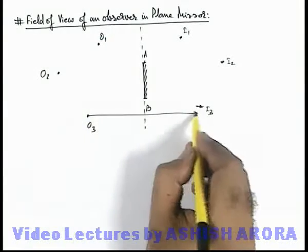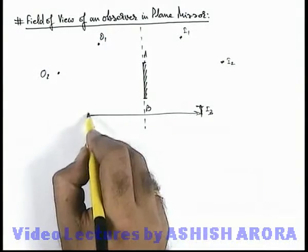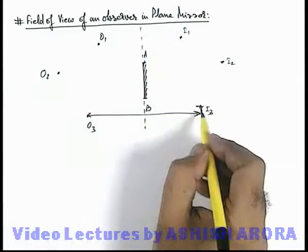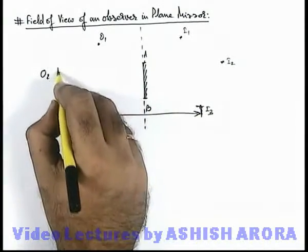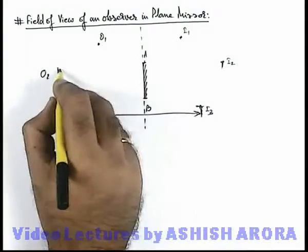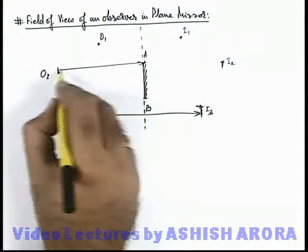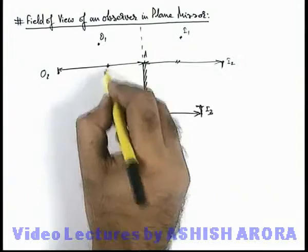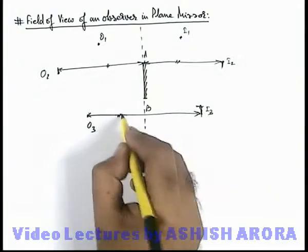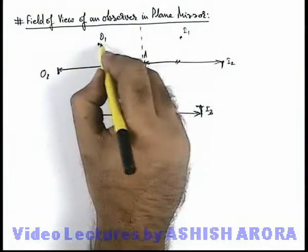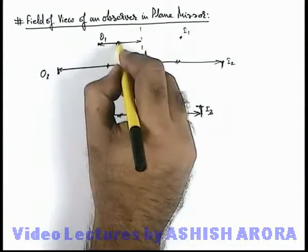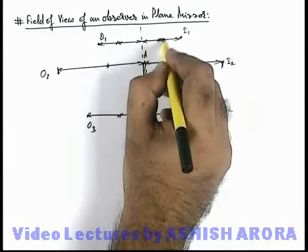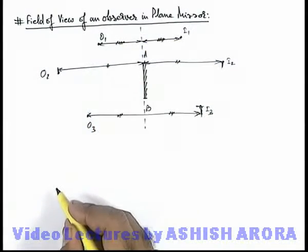Here we can note that the object distance of O3 is the same as its image distance. Similarly, the object distance of O2 is exactly equal to its image distance. And for object O1, the object distance is the same as its image distance I1.